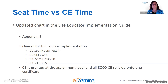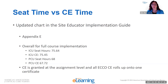CE is granted at the assignment level, but when the learner goes to get their CE on the AACN website, all of the ECHO CE rolls up onto one certificate. So they're not being given 75 different certificates for all of the assignments — it rolls up onto one certificate, which is a nice bonus.